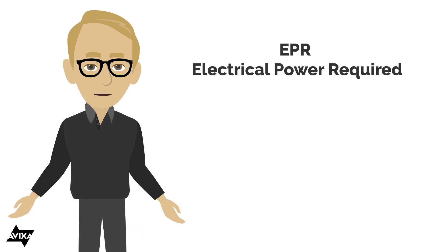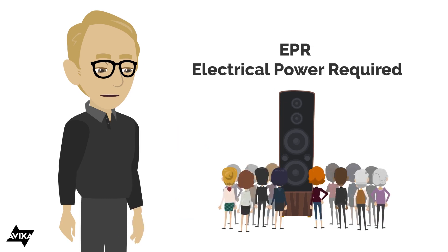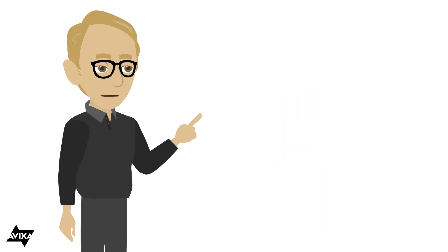EPR stands for electrical power required, and this formula is going to help us do things like: I've got a 70 or 100 volt loudspeaker, what wattage tap do I need to produce the required SPL at the listener position? That's what the EPR formula is going to do, so let's take a look at it on the math sheet.